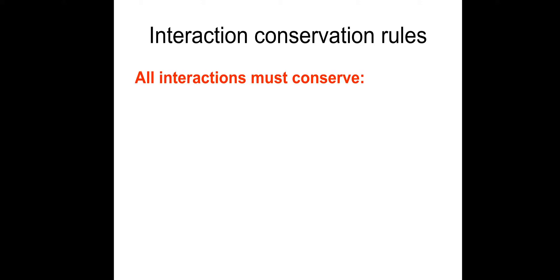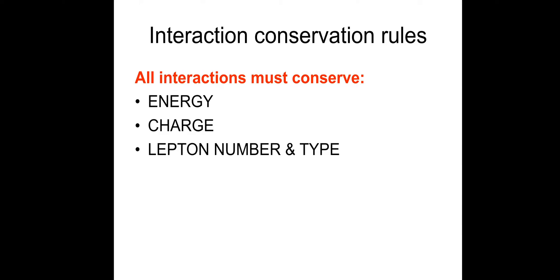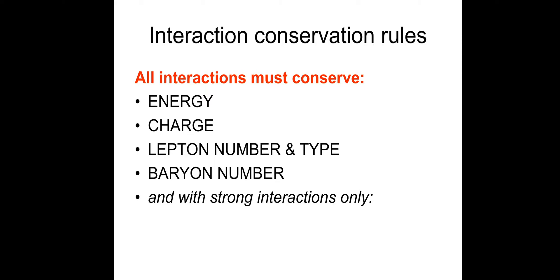Interaction Conservation Rules. All interactions must conserve energy, charge, lepton number — and type of lepton number, because we've got the electron lepton number and the muon lepton number which we'll look at later — baryon number, and with strong interactions only, strangeness must also be conserved.